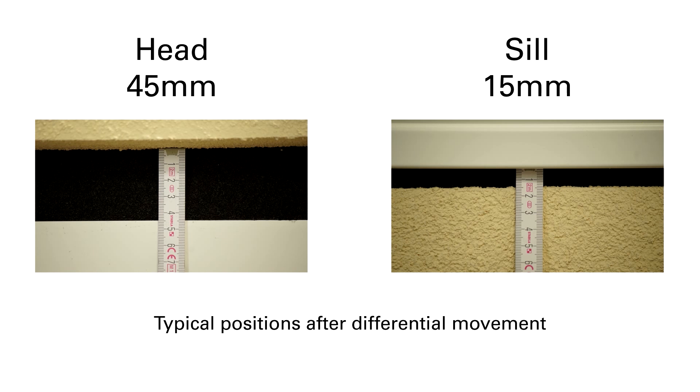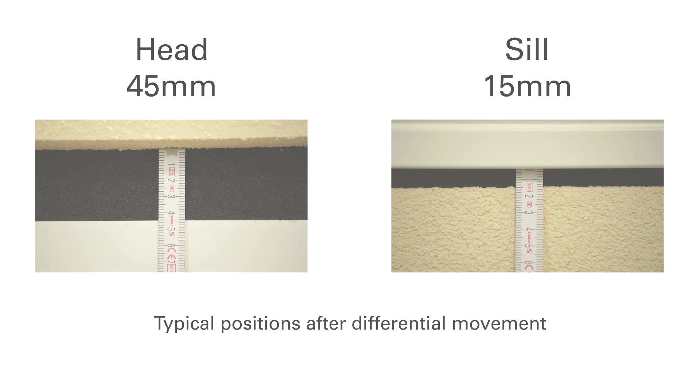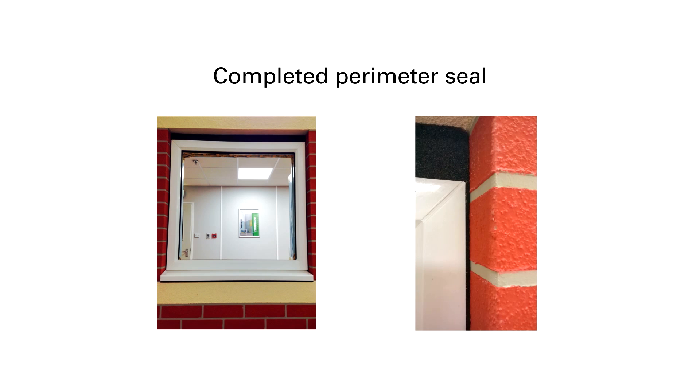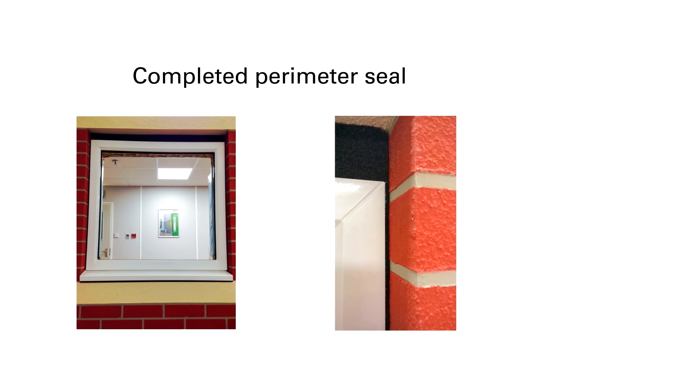After all the settlement has taken place, the gaps can be typically 45 millimetres at the head and 15 millimetres at the sill. The completed perimeter seal is capable of accommodating the high levels of differential movement whilst maintaining excellent weather resistance.